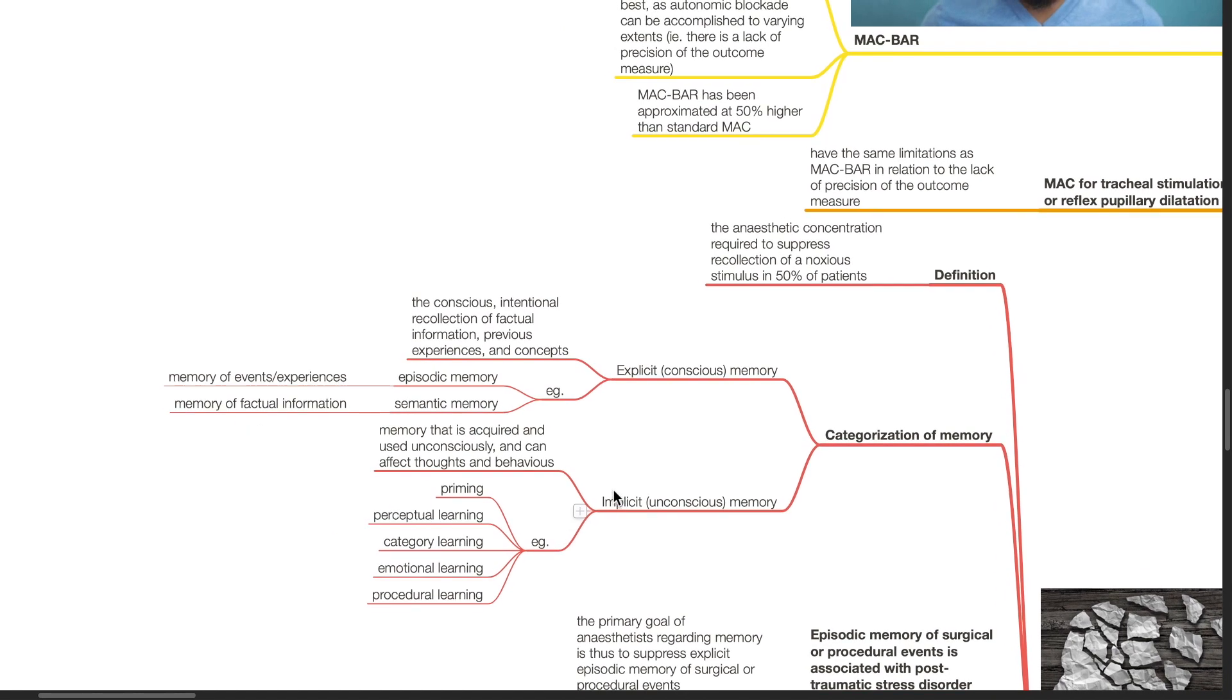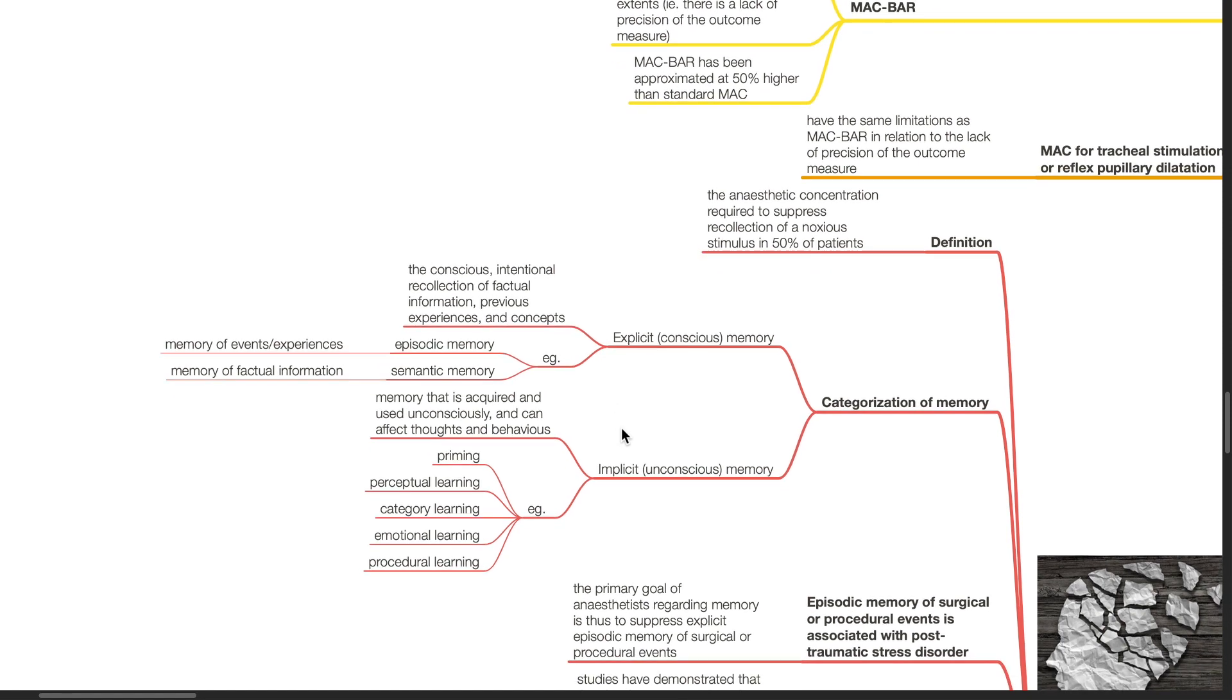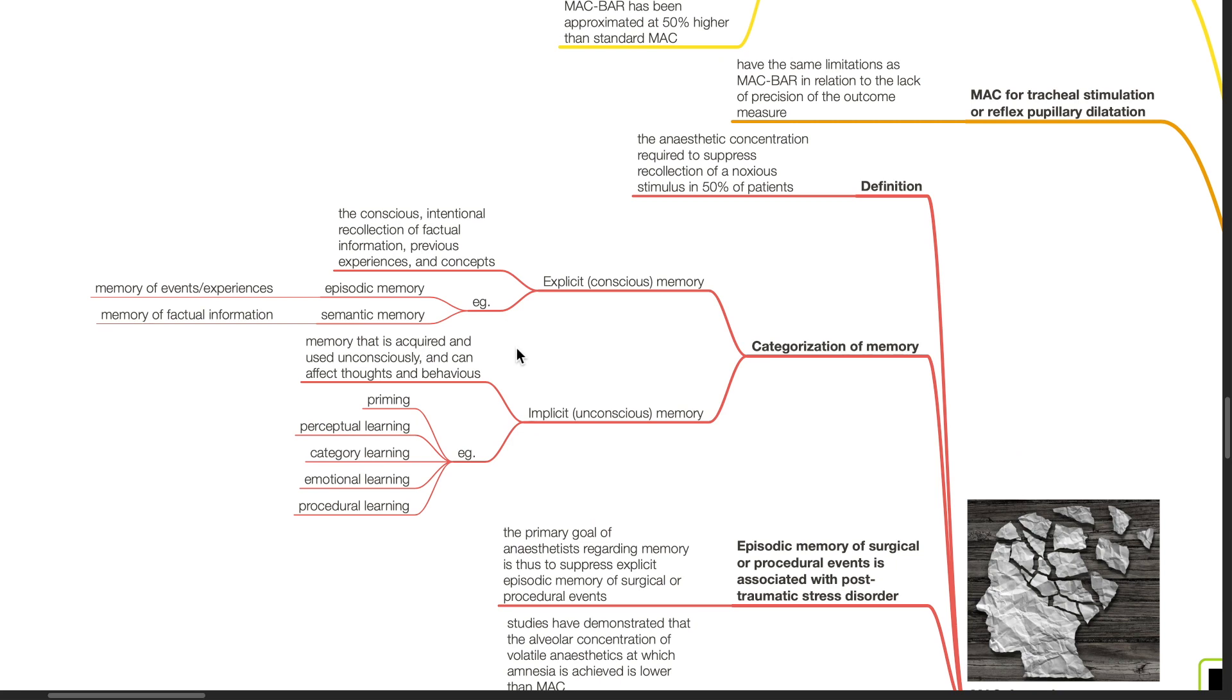Explicit memory is the conscious, intentional recollection of factual information, previous experiences and concepts, and can be divided into episodic memory and semantic memory. Episodic memory refers to the memory of events or experiences, and semantic memory refers to the memory of factual information.